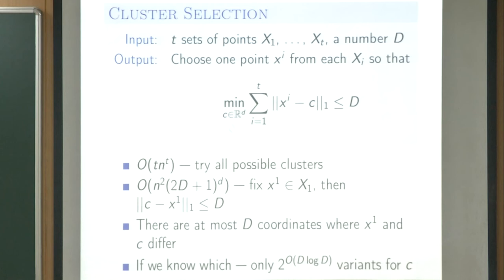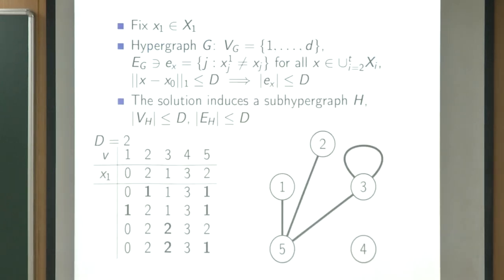There's another key observation: there are at most D coordinates where x1 and the cluster center c differ. So if we identify x1, we can try all possible sets of differing coordinates — they differ in at most D coordinates and in each coordinate by at most D capital. Since D capital is small, we can try everything once we know which coordinates differ.